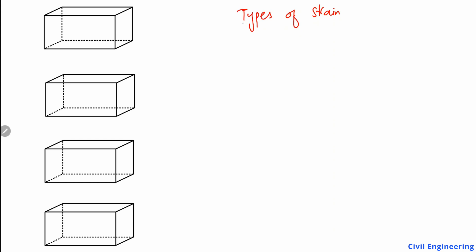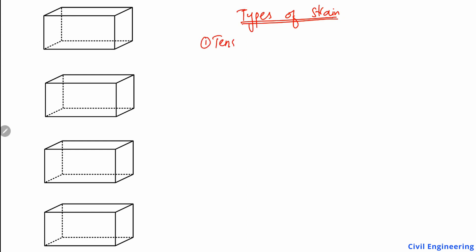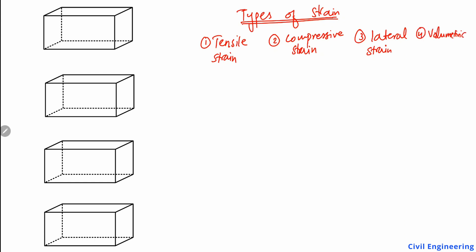Today's lecture is mainly focused on the types of strain. There are basically four types of strain and I will explain them one by one with the help of examples and figures, so it will be easy to follow and understand. The first type is tensile strain, the second is compressive strain, the third is lateral strain, and the fourth is volumetric strain.